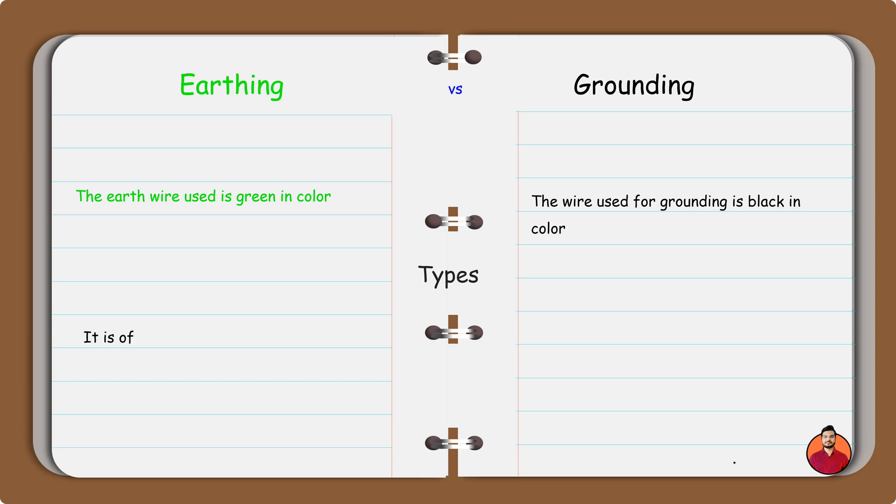The earthing is of five types, such as pipe, plate, rod earthing, tap earthing, and strip earthing.